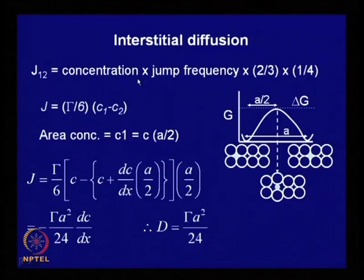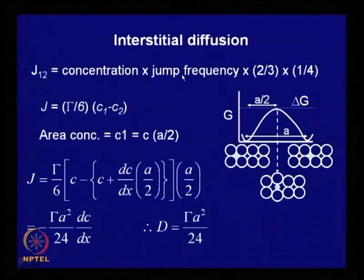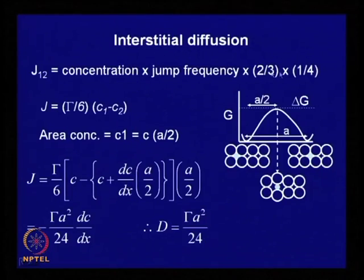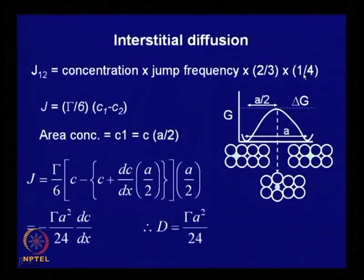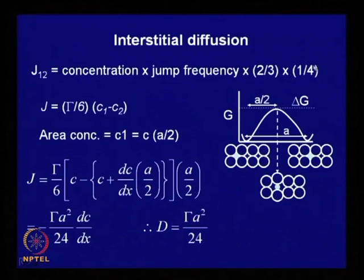Diffusion can be visualized energetically: an interstitial atom at a stable site has a minimum free energy. To migrate to the next site, it must push apart neighboring atoms, passing through an activation energy hill. Once it crosses the midpoint (distance a/2), the other half of the jump is spontaneous. So the effective distance the atom must overcome is a/2. The net flux depends on the concentration (atoms per unit area), the jump frequency Γ, and a geometrical factor of 1/6 for 3D motion in a specific direction.